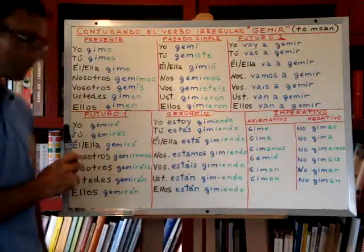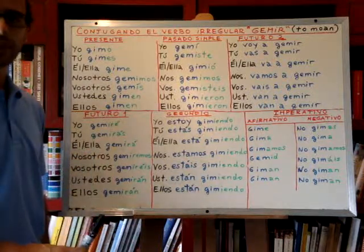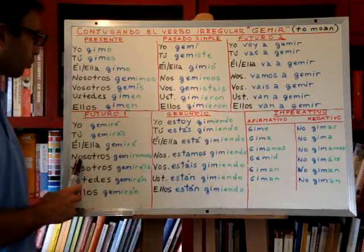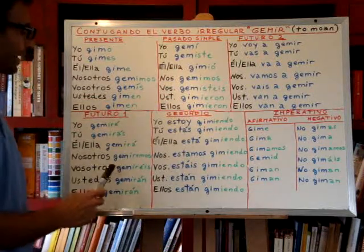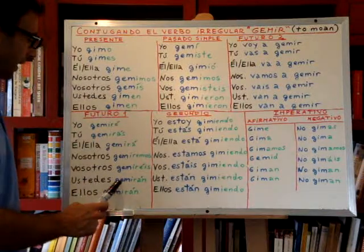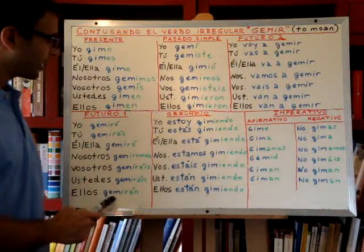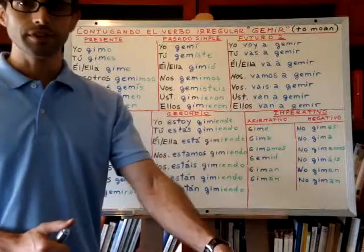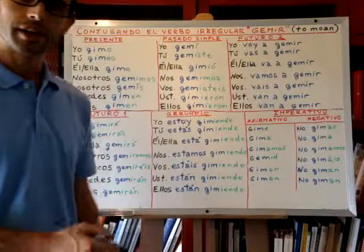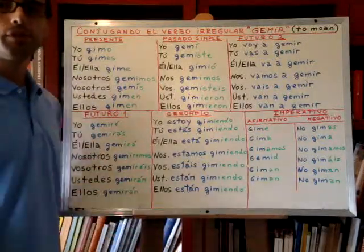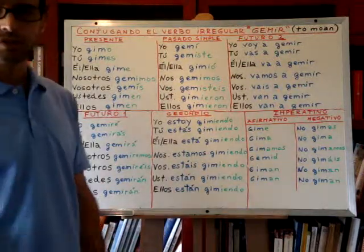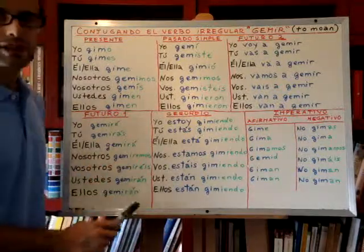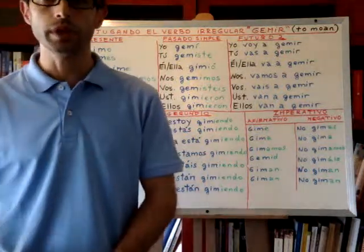Now let's see the simple future. Yo gemiré — I will moan. Tú gemirás. Él gemirá. Nosotros gemiremos. Vosotros gemiréis. Ustedes gemirán. And ellos gemirán. For example, we can say: si tú haces eso — if you do that — entonces gemirás de dolor. You will moan in pain.